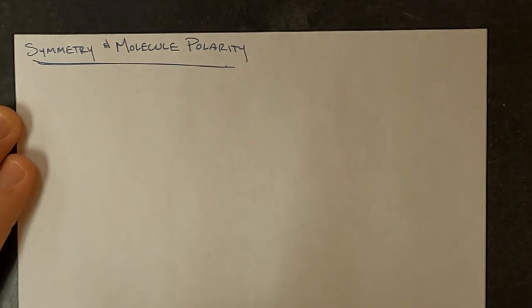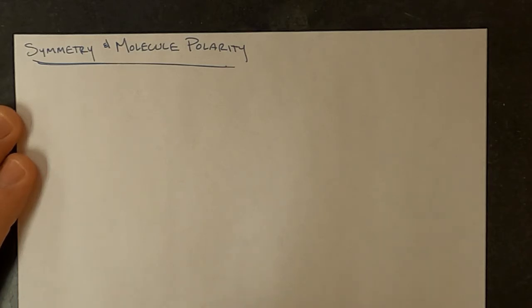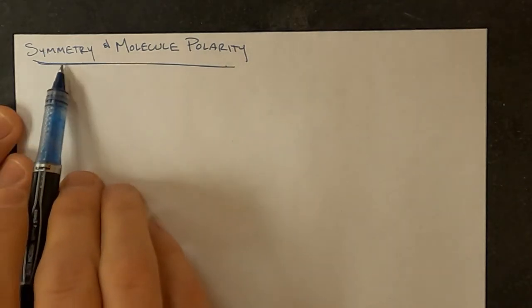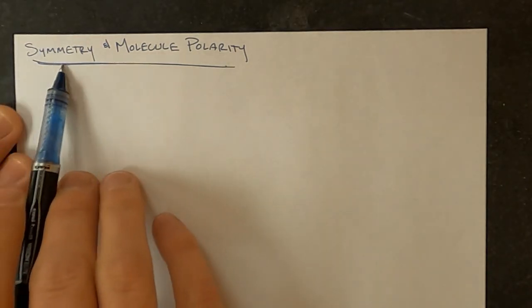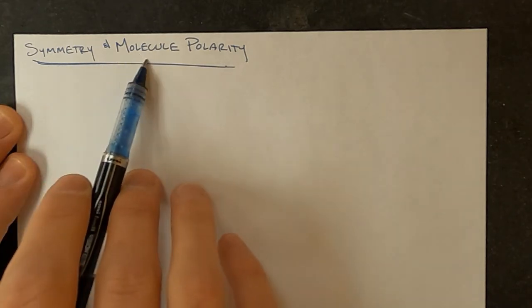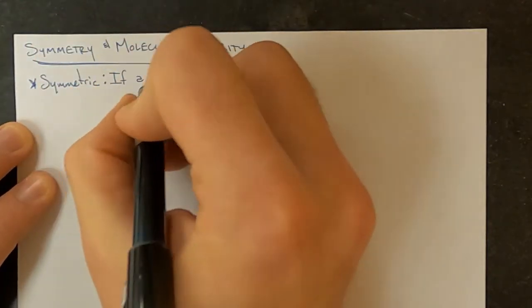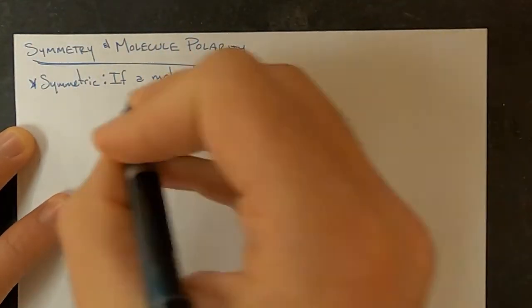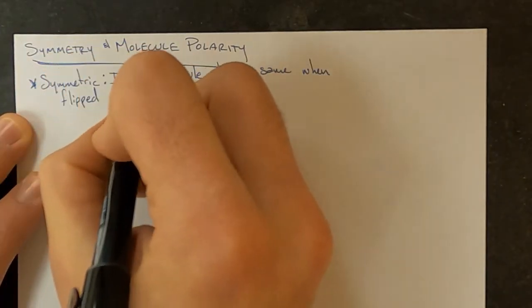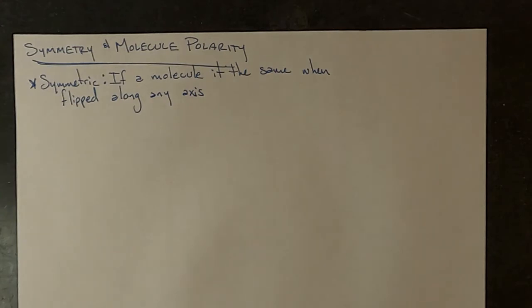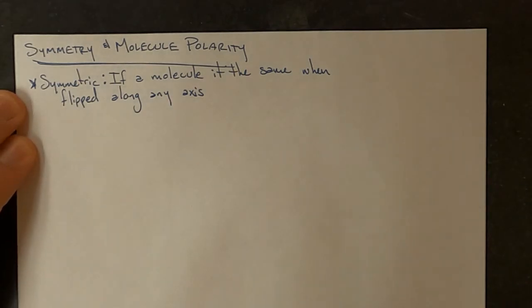Last week you should have looked at how to take a diagram of a molecule and determine its shape using model kits, simulations, or a reference chart. We're going to use those shapes of molecules to determine if they are symmetric or not, because whether a molecule is symmetric determines if the entire molecule is polar or not.